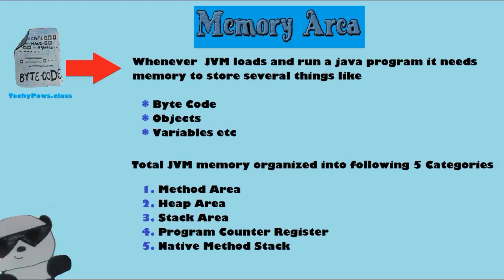For each thread, a separate PC (Program Counter) register is created at thread creation time. The PC register contains the address of the currently executing instruction; once the instruction completes, the PC register is automatically incremented to hold the address of the next instruction. All native methods invoked by a thread are stored in the corresponding native method stack.